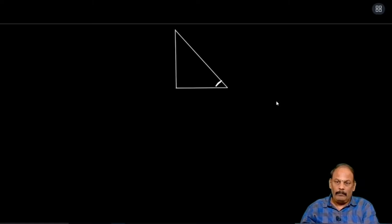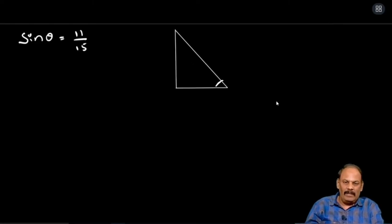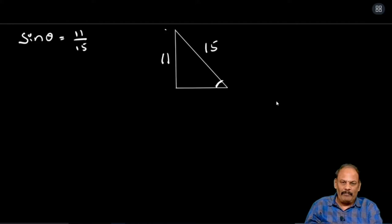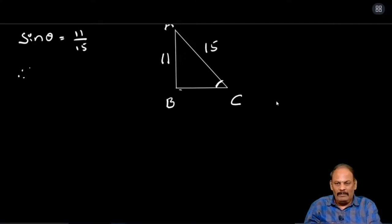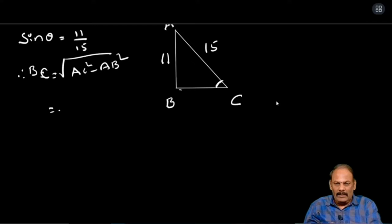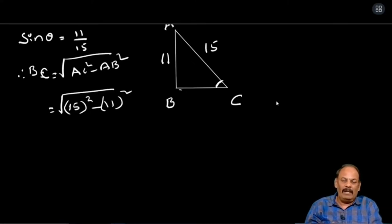One more sum: sin theta equal to 11 by 15. The basic definition of sin theta is opposite side by hypotenuse. We will title it ABC. We need BC. BC equal to root of AC square minus AB square, that is root of 15 square minus 11 square. We did not apply 15 into 15, 11 into 11 directly.